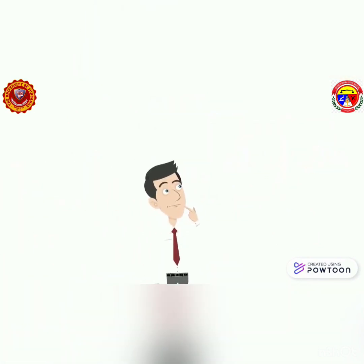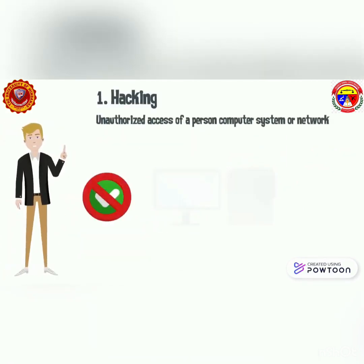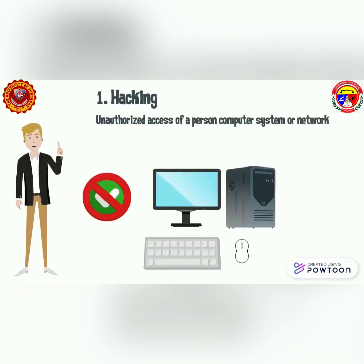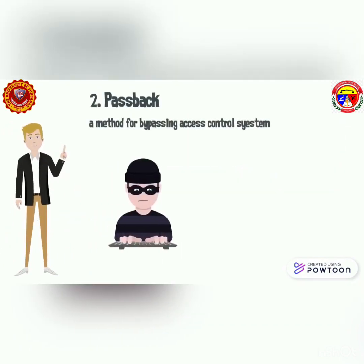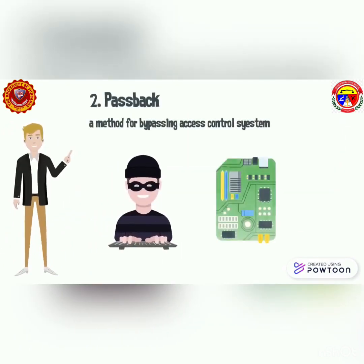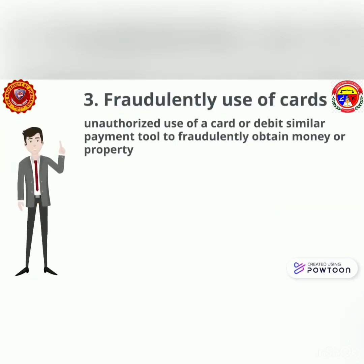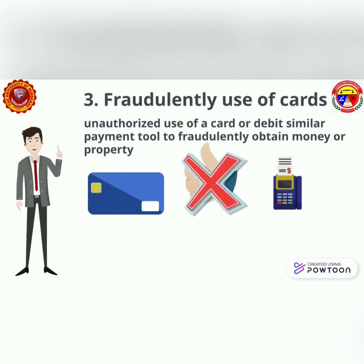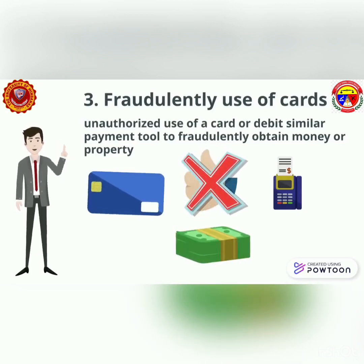What are examples of illegal access? 1. Hacking — unauthorized access of a personal computer system or network. 2. Passback — a method for bypassing an access control system. 3. Fraudulent use of a card — unauthorized use of a credit or debit card or similar payment tool. 4. Fraudulently obtain money or property.